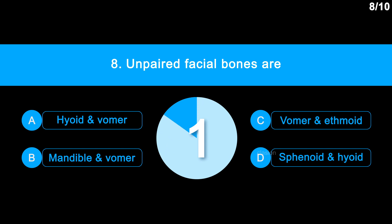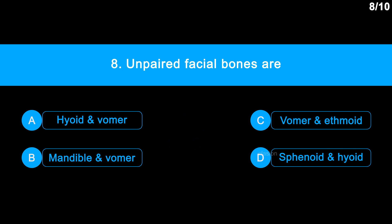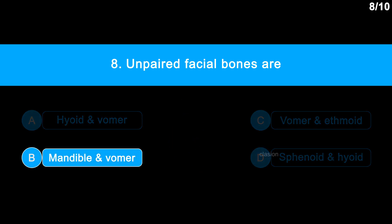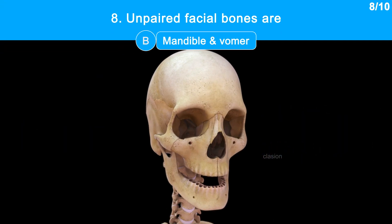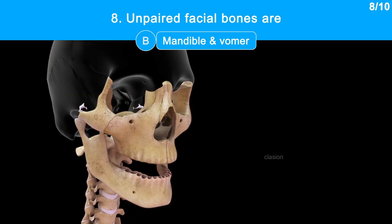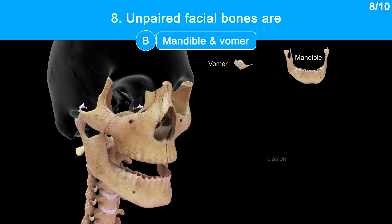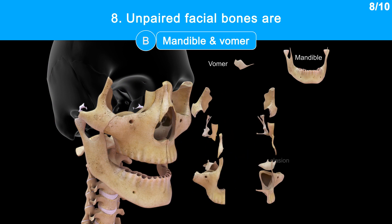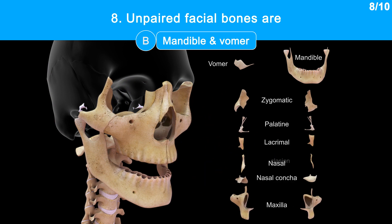The correct answer is Option B: Mandible and Vomer. In our skull, out of 14 facial bones, the mandible (lower jaw) and the vomer, which forms the inferior part of the nasal septum, are unpaired. The remaining facial bones are six pairs.